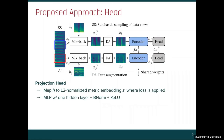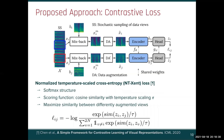The final block of our pipeline is a projection head that maps the representation h to an L2-normalized embedding where the contrastive loss is applied. Following previous work in visual representation learning, we adopt a simple MLP with one hidden layer and a non-linearity.